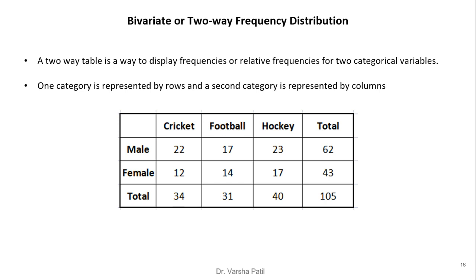Bivariate or two-way frequency distribution: a two-way table displays frequency or relative frequency for two categorical variables. One category is represented by rows and the second by columns. For example, information on cricket, football, and hockey is represented by male and female. Such a distribution can be used to calculate joint probability, representing two categorical variables with their various combinations.